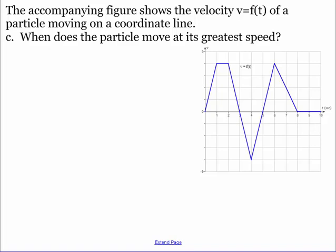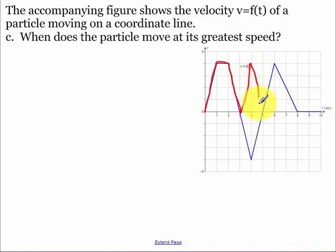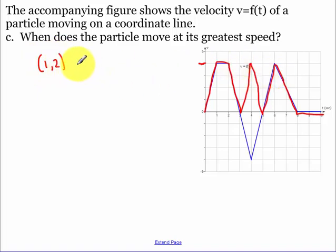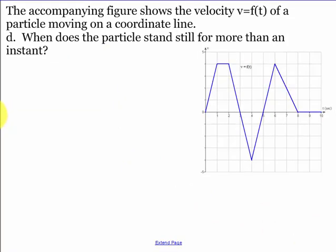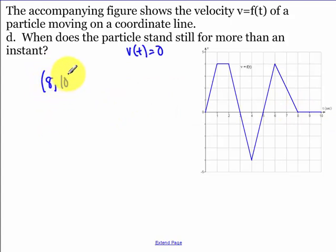When does the particle move at its greatest speed? Speed is the absolute value of velocity. Drawing the speed curve, the highest value occurs at t equals four and at t equals six — and that value corresponds to the interval from one to two on the velocity graph. The particle is standing still when velocity equals zero, which is from eight to ten.